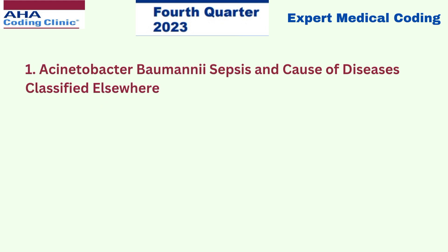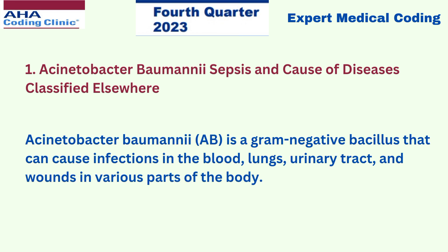Let's get started with the first one — Acinetobacter baumannii sepsis and cause of diseases classified elsewhere. Acinetobacter baumannii is a gram-negative bacillus that can cause infections in the blood, lungs, urinary tract, and wounds in various parts of the body.